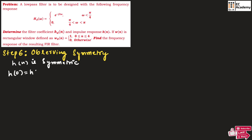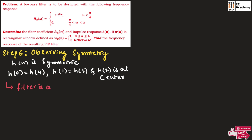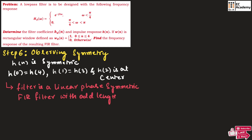Step 6 is to observe the symmetry. We can observe that h of n is symmetric since h of 0 equals h of 4, h of 1 equals h of 3, and h of 2 is at the center. This confirms that the filter is a linear phase symmetric FIR filter with odd length, meaning M equals 5.